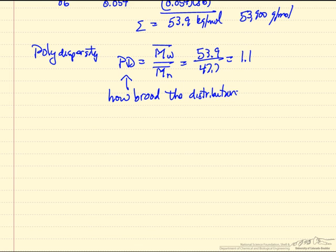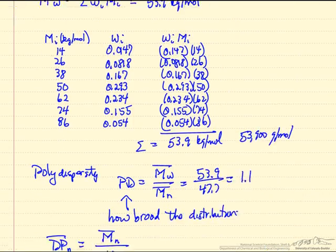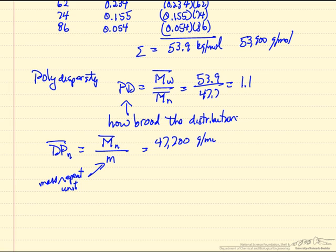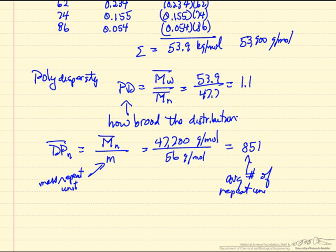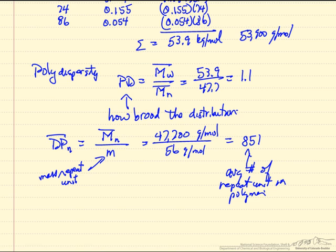The last thing to calculate is the degree of polymerization, indicated by the symbol DP. This is the number average molecular weight divided by the mass of the repeat unit — which in this problem is 56 grams per mole. This corresponds to the average number of repeat units in the polymer. So we've shown how to calculate two types of average molecular weights, the polydispersity indicating distribution breadth, and the average number of repeat units.